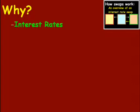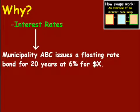Now, the first question you might be asked is: why would a party enter into an interest rate swap? That's a good question. We'll start off with interest rates. For this example, I'm going to use Municipality ABC — we'll just call them Muni ABC.